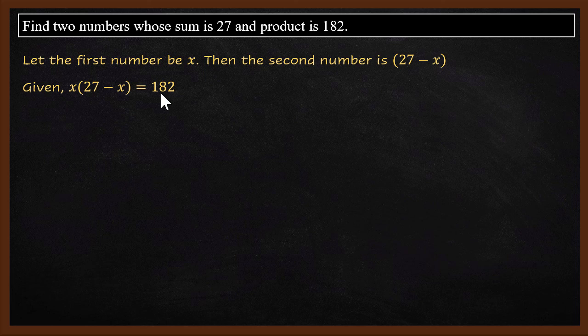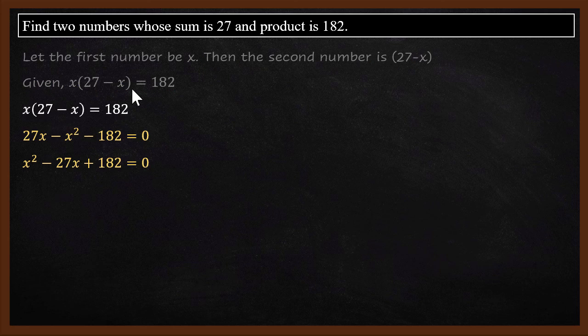Product is given as 182, which basically means when you multiply x with the second number, 27 minus x, is 182. Now that we have this equation, let's go to the next step.